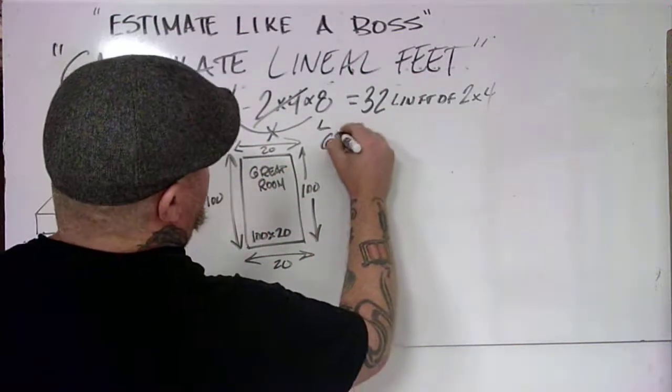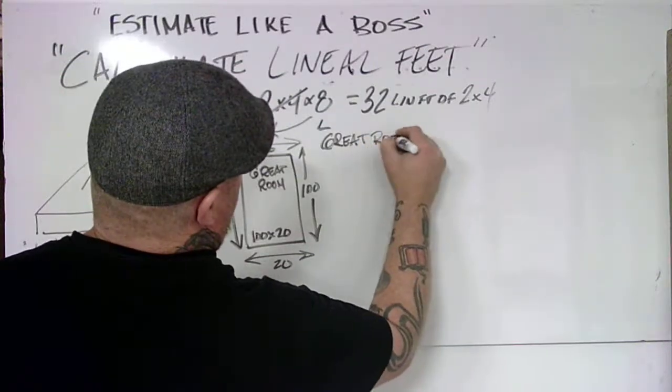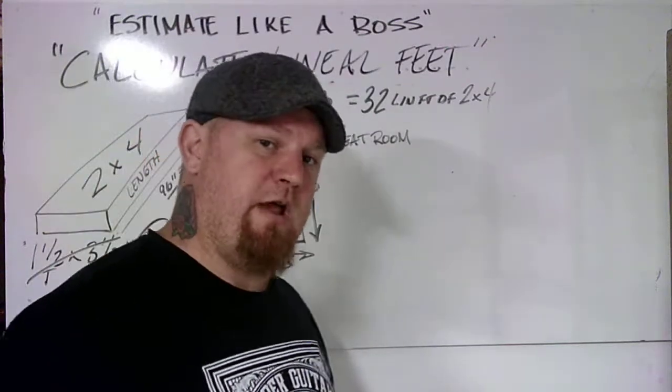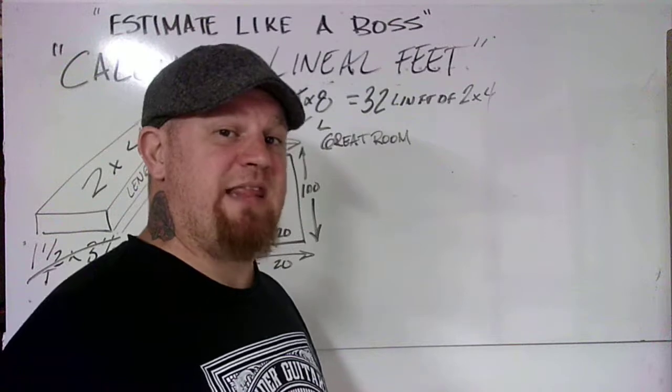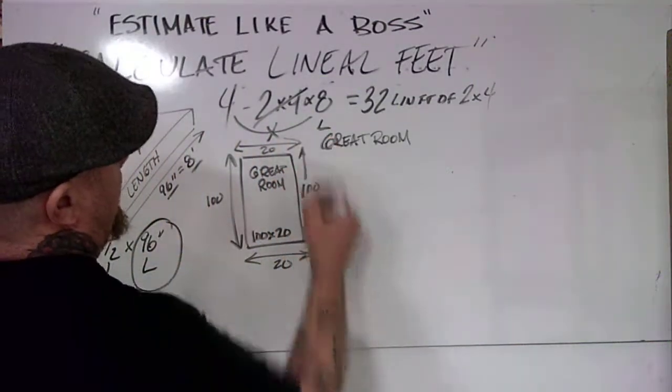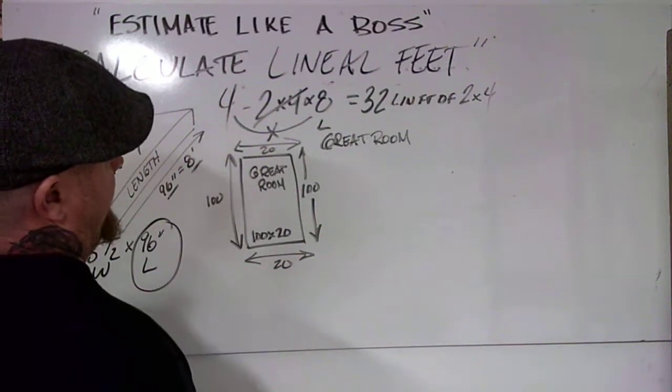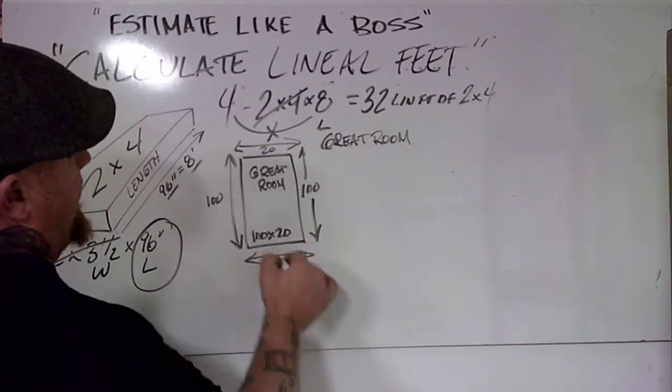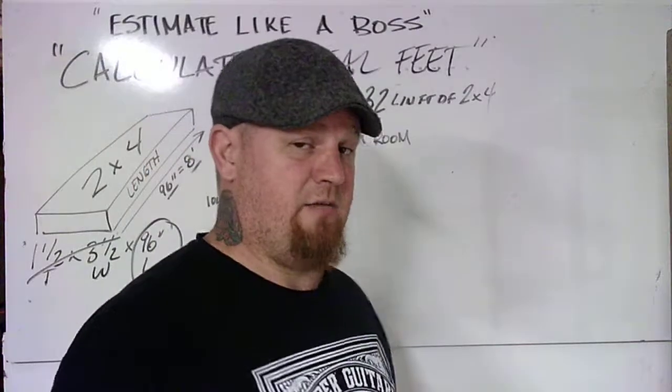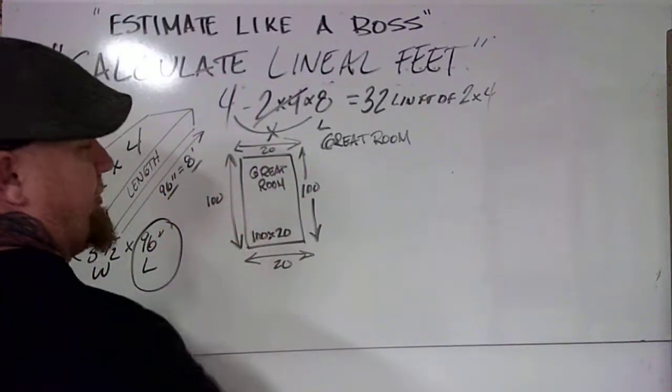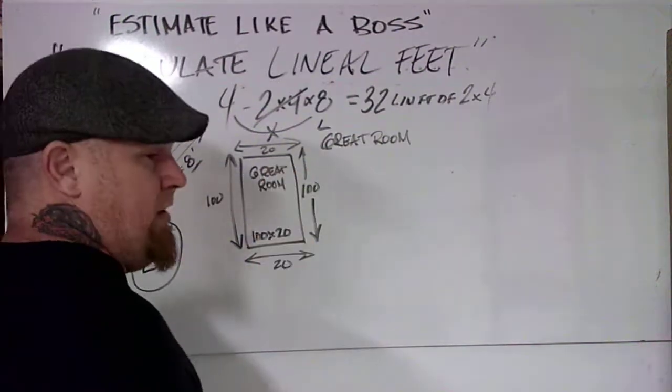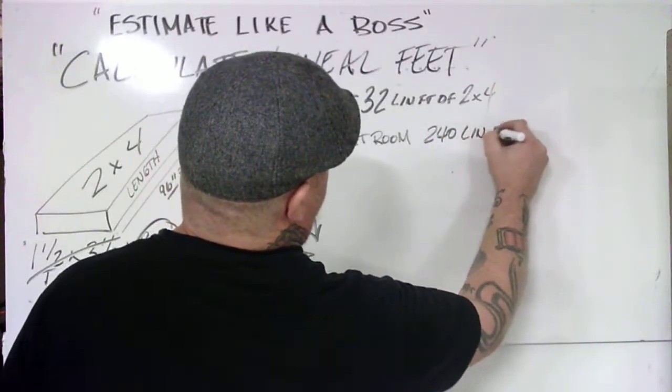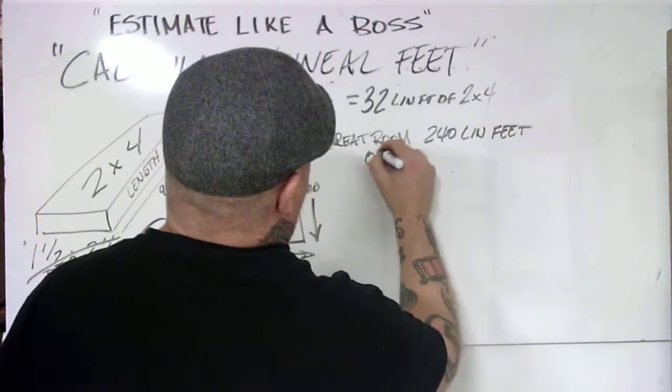We want to figure out how much crown molding we need around the ceiling in the great room. The first thing we're going to do is add up the lengths of the wall. This is an overhead view. This wall's 100 feet in length, this wall's 20 feet, this wall's 100 feet, and this wall's 20 feet again. We're going to add all these numbers up to figure out our total linear feet needed. 100 plus 100 is 200, 20 plus 20 is 40, 200 plus 40 equals 240 lineal feet of wall.